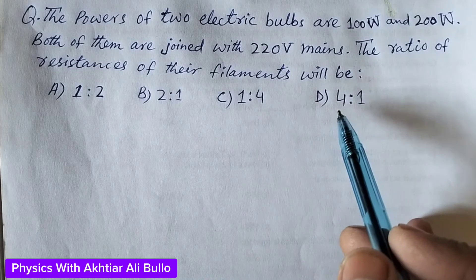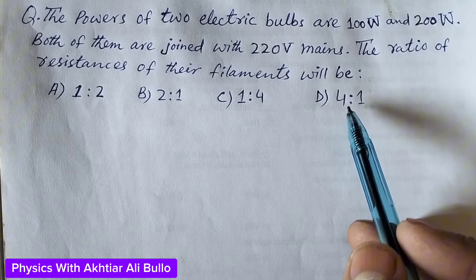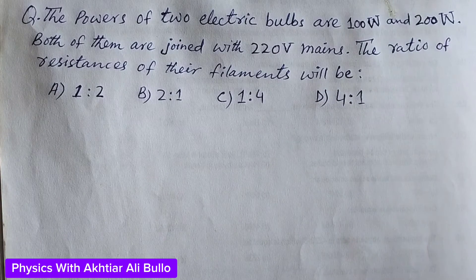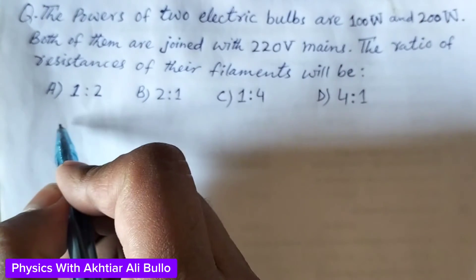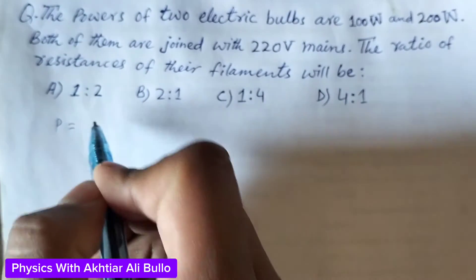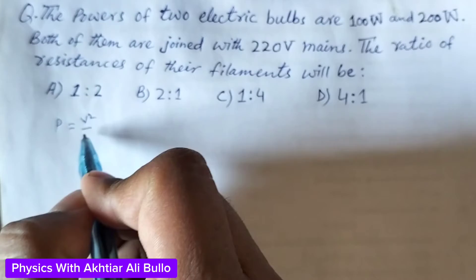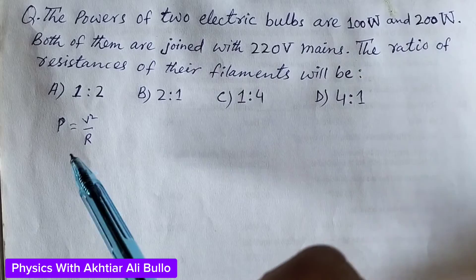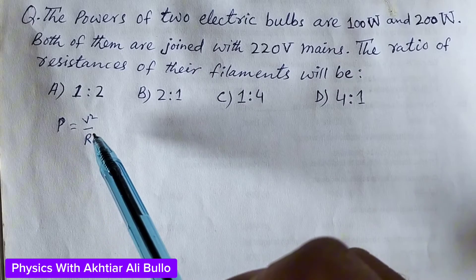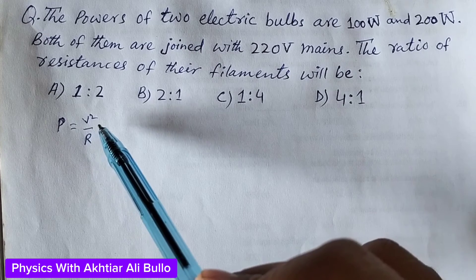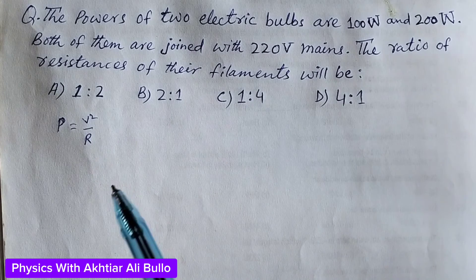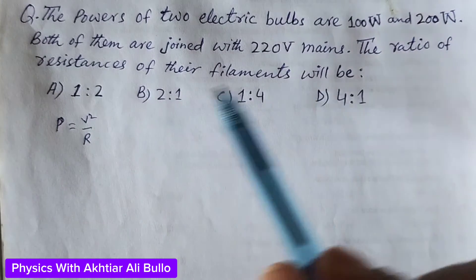P is equal to V squared upon R. Power loss is calculated by using the formula P = V²/R. We have to find the ratio of resistances.